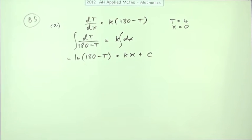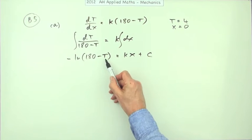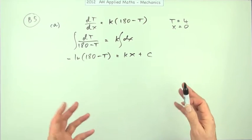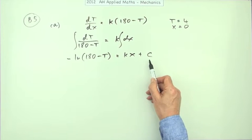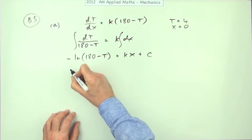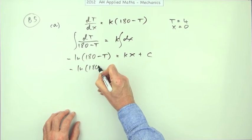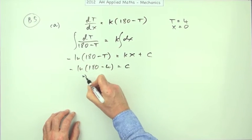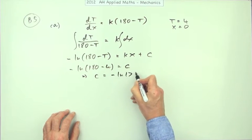I've used ordinary round brackets rather than absolute value because, thinking about the physics, t is never going to exceed 180 — that's the temperature of the oven, so the turkey can't get hotter than the oven. To find c, substitute t=4 and x=0: negative ln(180 minus 4) equals c, so c equals negative ln(176).